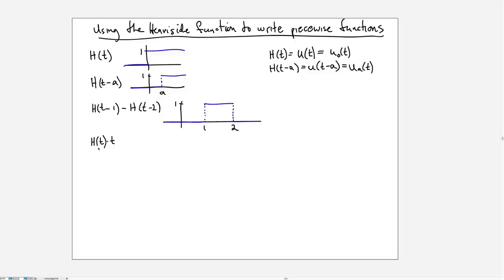Next example: what happens if you take the Heaviside function and multiply it by some function of t, let's say in this case the simple function t? This will be exactly 0 up until t equals 0, but then once you get above t equals 0, h of t is 1 and you're multiplying that by t, so we get a straight line rising with slope 1.